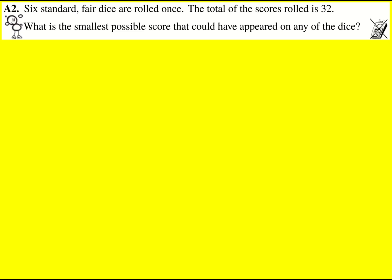Six standard dice means the dice are numbered from one to six. The total of the scores rolled is 32. We want to know the smallest possible score that could appear on any of the dice.